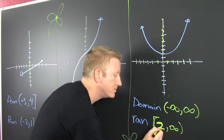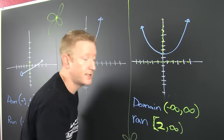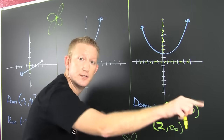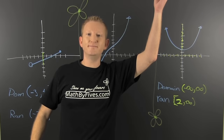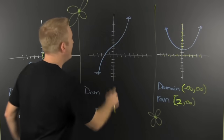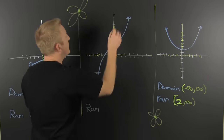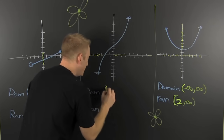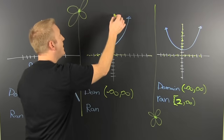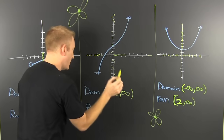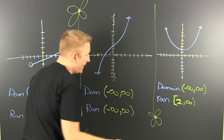Does the order matter in interval notation? Yes — lowest value on the left, highest on the right. For this third example, it looks like all x values are represented, so the domain is minus infinity to infinity. All y values are also represented, so the range is also minus infinity to positive infinity.